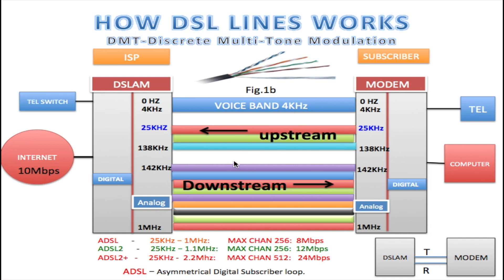We have another separation to prevent interference between the upstream and downstream. The downstream starts at 142 kHz and goes up to 1 MHz. The upstream is information coming from the modem back to the DSLAM, and the downstream goes from the DSLAM to the modem. Between 25 kHz and 1 MHz — if you look at ADSL, ADSL goes between 25 kHz and 1 MHz, so this is ADSL that we're demonstrating.